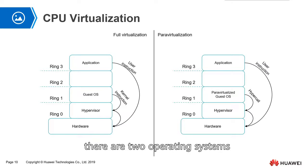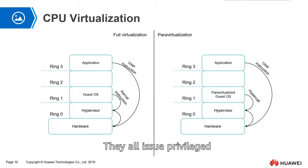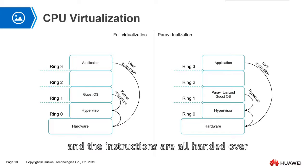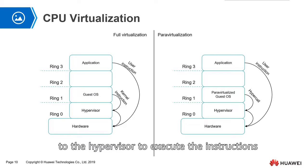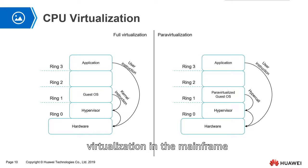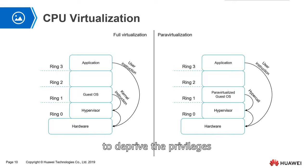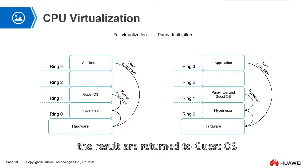When there is virtualization, there are two operating systems on one physical host: the host OS and the guest OS. They both issue privileged instructions, but the hardware does not know the priority. So the sensitive instructions issued by the guest OS are deprived of privilege and handed over to the hypervisor to execute. The hypervisor identifies and captures them using an interrupt mechanism to deprive the privilege, simulates the instruction itself, and then returns the results to the guest OS.